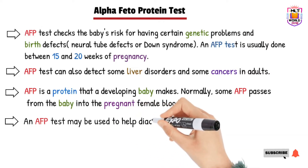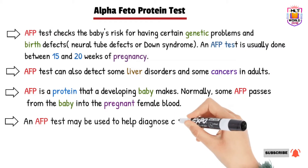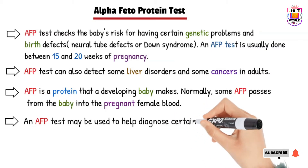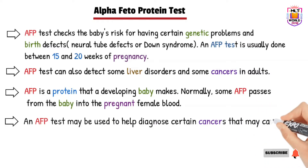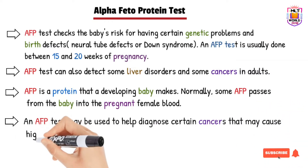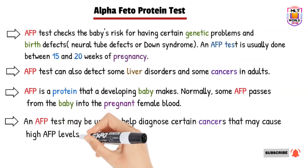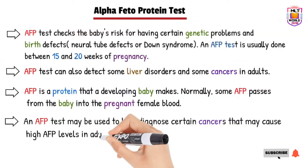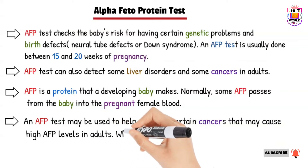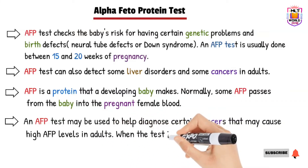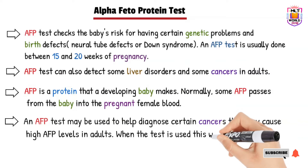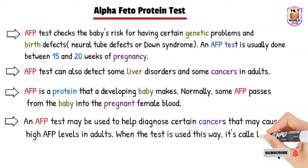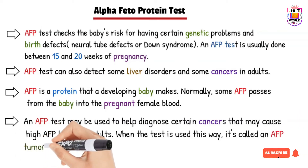AFP is also used to detect liver cancer or tumor. Since AFP is made by liver cells, when we use it to check for a tumor, it is called a tumor marker. AFP is one of the tumor markers in our body.